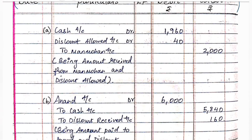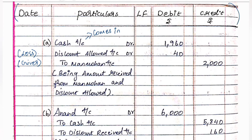Cash account debit — cash received, cash comes in, that's why we debit. Discount allowed is a loss, that's why we debit. Manmohan is the giver, that's why we credit. Narration: being amount received from Manmohan, discount allowed. So $1960 debit cash, discount allowed debit $40, and Manmohan account credit $2000.